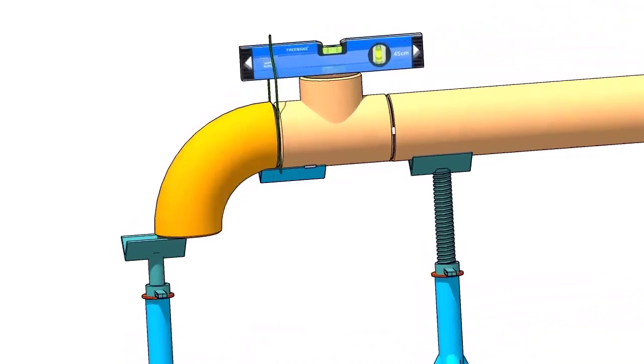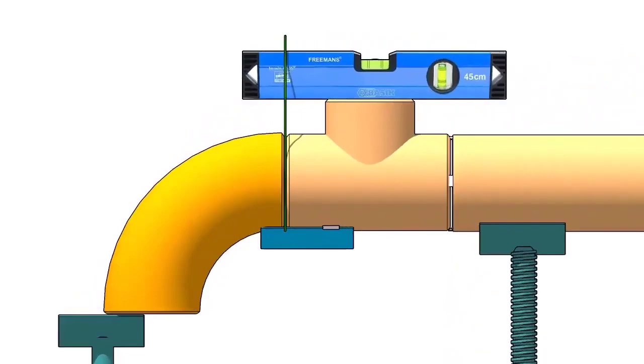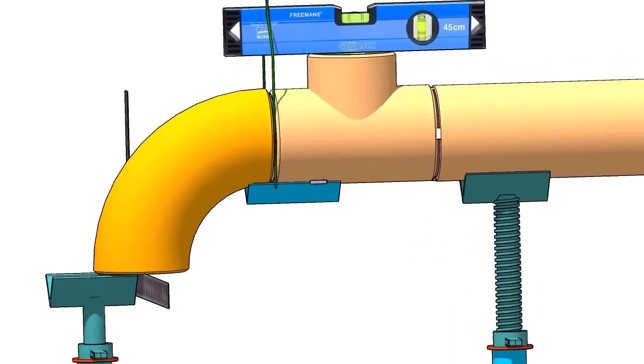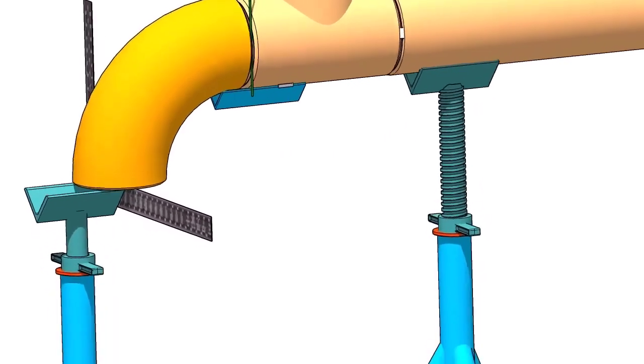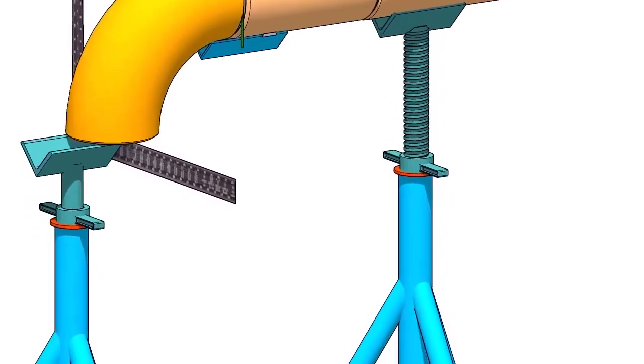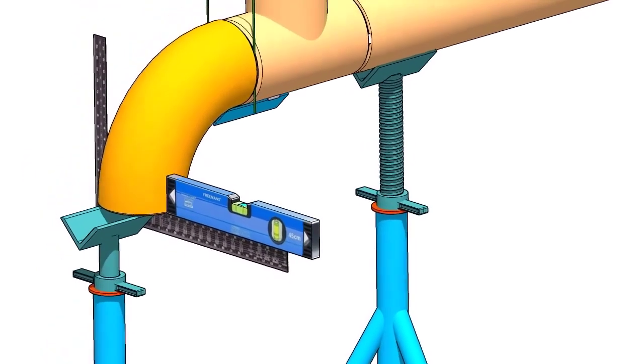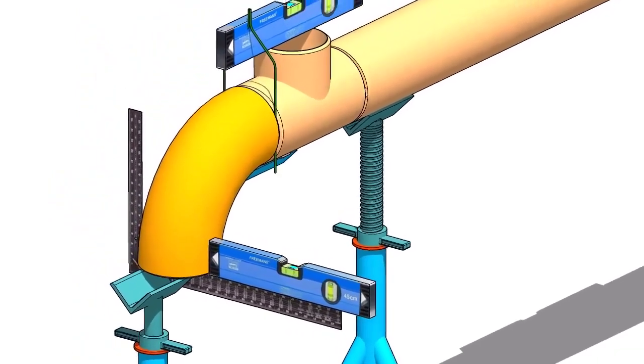Hold a large right angle or a straight edge below the elbow face firmly. Put a level bottle on the right angle as shown. Rotate the elbow to make the face level. Tack weld on both sides of the elbow with the tee.